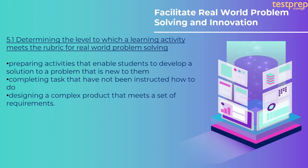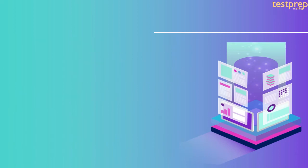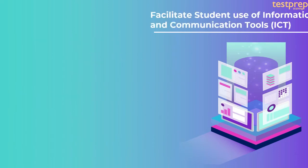Fifth, facilitate real-world problem solving and innovation. 5.1 determining the level to which a learning activity meets the rubric for real-world problem solving. It contains: first, preparing activities that enable students to develop a solution to a problem that is new to them; second, completing tasks that have not been instructed how to do; third, designing a complex product that meets a set of requirements. 5.2 selecting a strategy for encouraging students to problem solve, innovate, and apply a solution that benefits others in the real world — developing learning objectives that involve real-world issues.